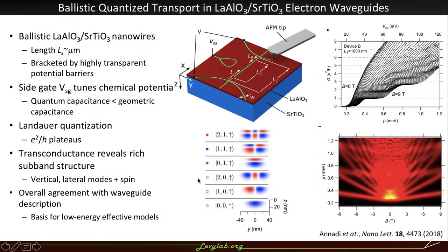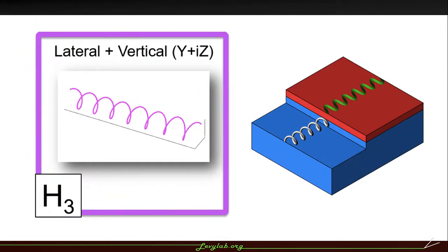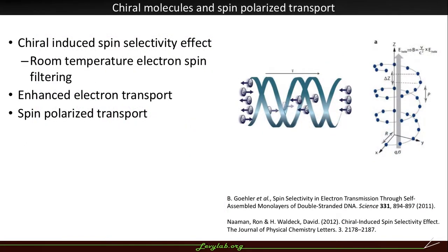Now we're going to look at this helical modulation where we've done the lateral and vertical modulation in quadrature. And so this is motivated by work that's been done with chiral molecules where they see the chiral induced spin selectivity effect.